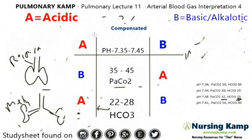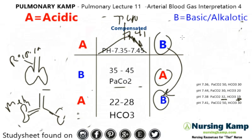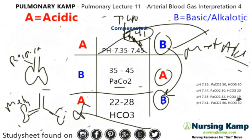Next example: a pH of 7.41. We know 7.40 is right at the top of the midpoint, and 7.41 is closer to the alkalotic side, so we circle that one. Then we have a PaCO2 of 50 and a bicarb of 40. We connect these two together — we know it's an alkalosis, and this is the metabolic area. So it's metabolic alkalosis. And it is compensated because the pH is in the middle. That's about it for compensated blood gas interpretation.